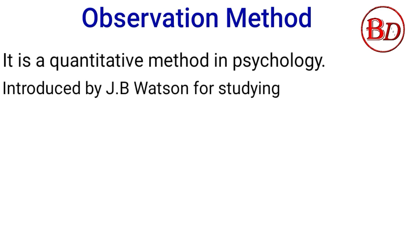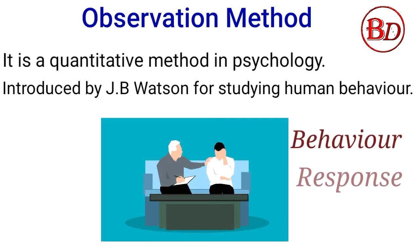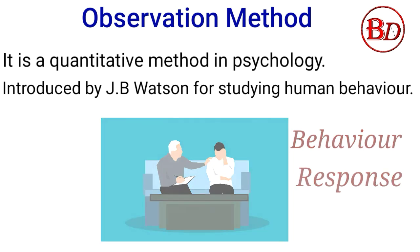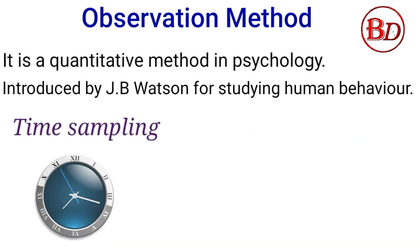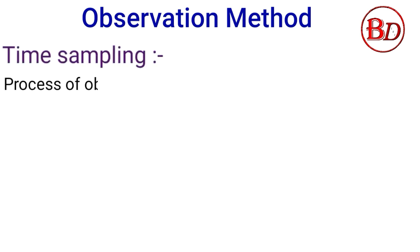Observation method: It is a quantitative method in psychology, introduced by J.B. Watson for studying human behavior. In this method, the psychologist observes the client, their behavior, and their response. The key components of this method are time sampling and situation sampling.